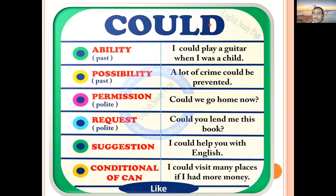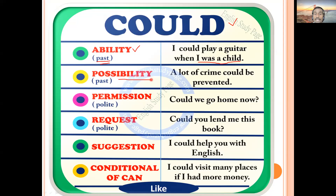Now let's move to 'could'. Could is the past form of 'can', but it can also be used in the present. For ability: 'could' expresses ability in the past. Example: 'I could play guitar when I was a child.' This tells us that playing guitar was my ability in the past. Now I cannot play guitar, but in my childhood I could.